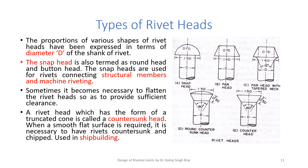Rivets are of different head types, and some of them are snap head, pan head, pan head with tapered neck, countersunk with round head, and countersunk with flat head. The standard dimensions of the rivets have been shown in terms of the diameter D of the shank of the rivet. Mainly snap heads are used for riveting structural members or in machine riveting. When a smooth flat surface is required, we go for a countersunk rivet — for example, in shipbuilding.